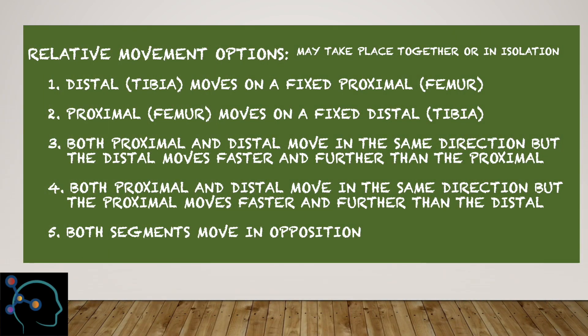In addition to moving the tibia on a fixed proximal femur, we could also take the proximal femur and externally rotate it on a fixed distal tibia. This would place the tibia in a position of relative internal rotation to the femur. Both the proximal and distal bones can move in the same direction of internal rotation, but the distal bone — the tibia — would move faster and further than the proximal.